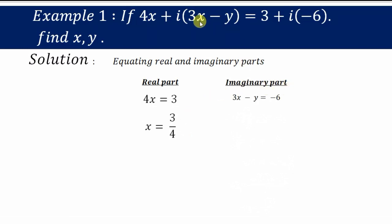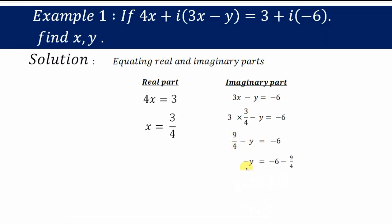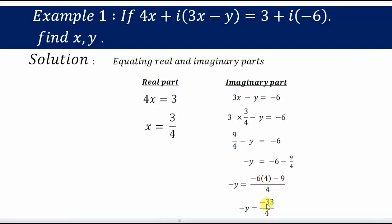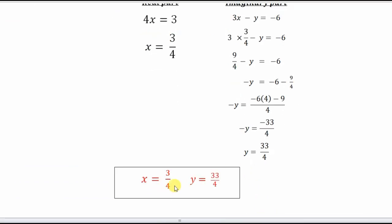For the imaginary part, we equate 3x − y = −6. Substituting x = 3/4: 3 × (3/4) − y = −6, giving 9/4 − y = −6. Shifting 9/4 to the other side: −y = −6 − 9/4. Taking LCM: −y = (−24 − 9)/4 = −33/4, so y = 33/4. Therefore x = 3/4 and y = 33/4.